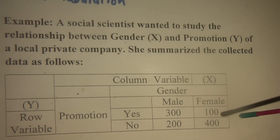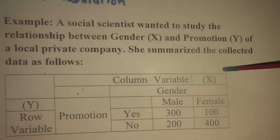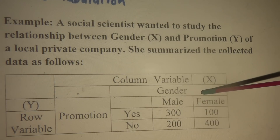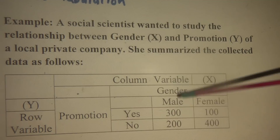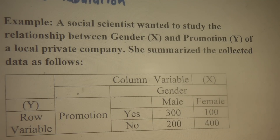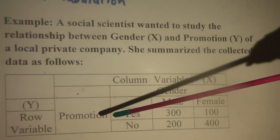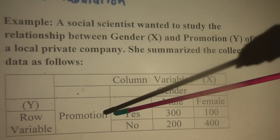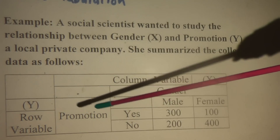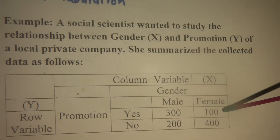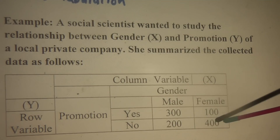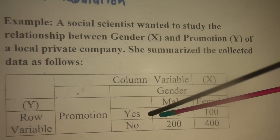Here, X is gender. Gender is a column variable — this is a column: male, female. So gender is a column variable. Promotion status is what we call the row variable, which is Y. The values are yes or no.